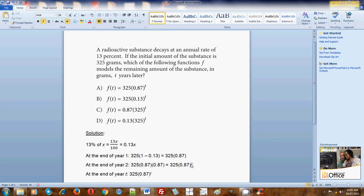So logically, at the end of year t, the amount of radioactive substance in grams will be 325 times 0.87 to the tth power. And this is exactly what you see in choice A. This is the final answer that we've arrived at.